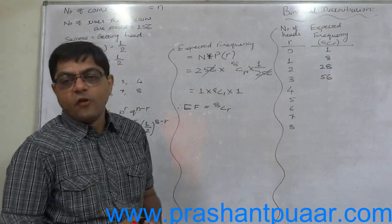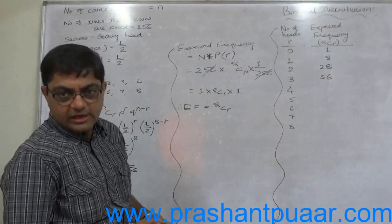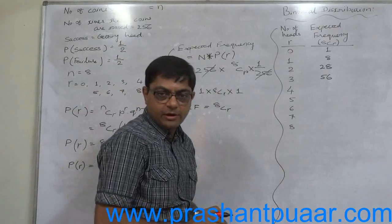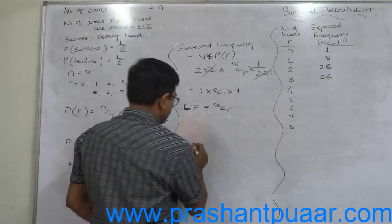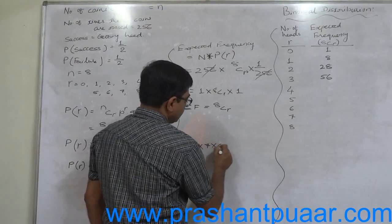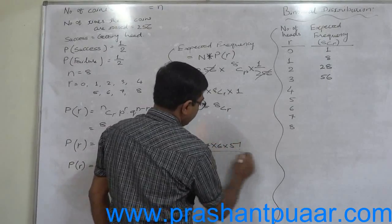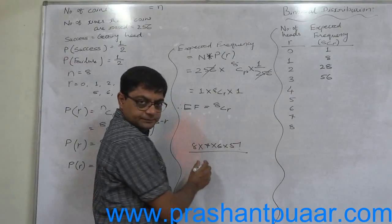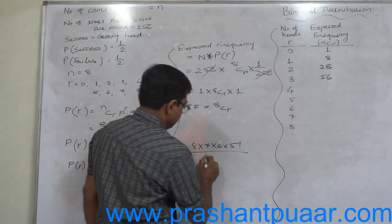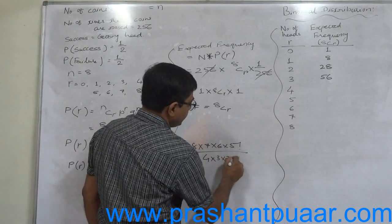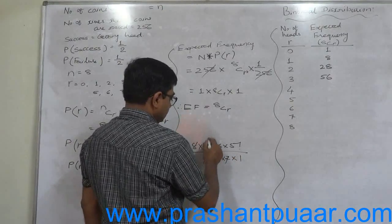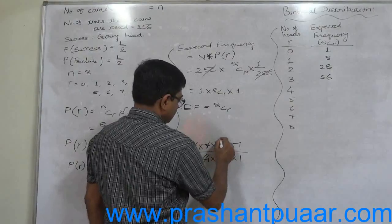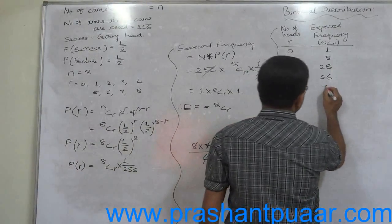What is 8C4? 8 into 7 into 6 into 5 divided by 4 factorial. 4 factorial is 4 into 3 into 2 into 1. Just cancel. So it is ultimately 70.